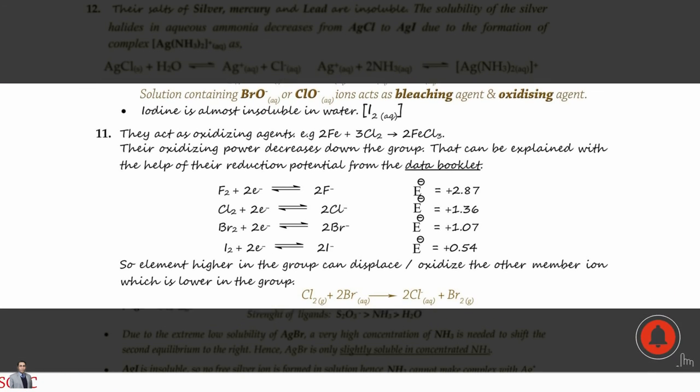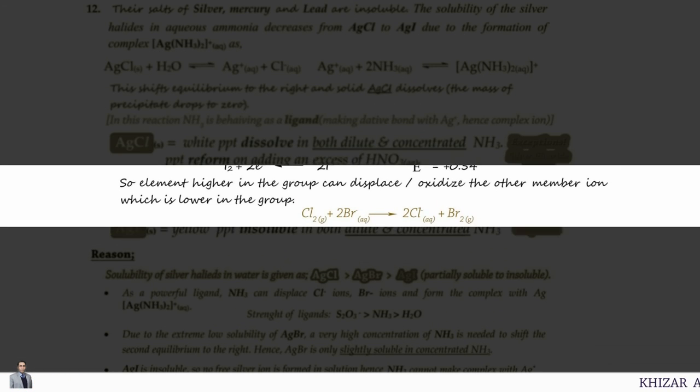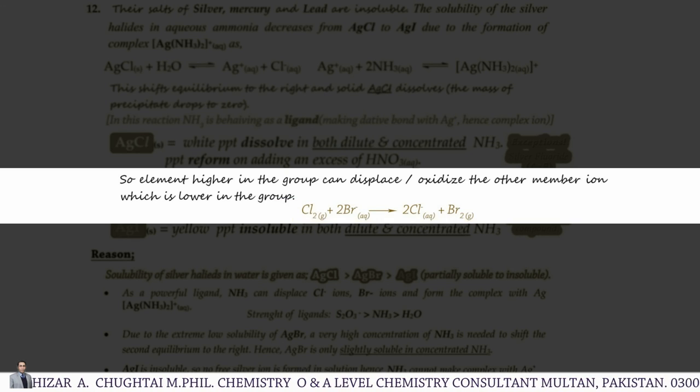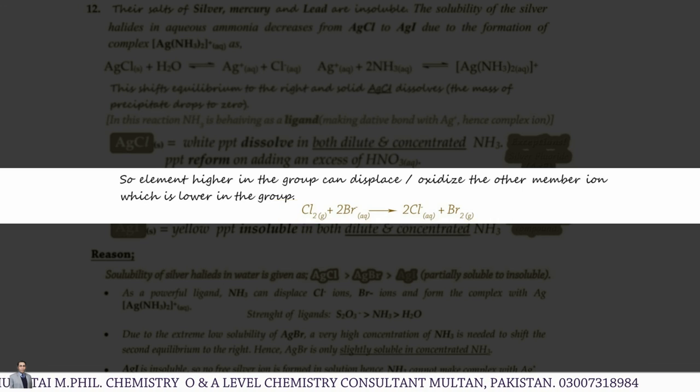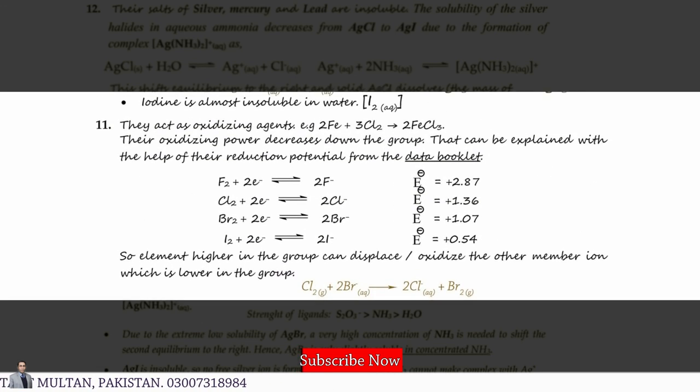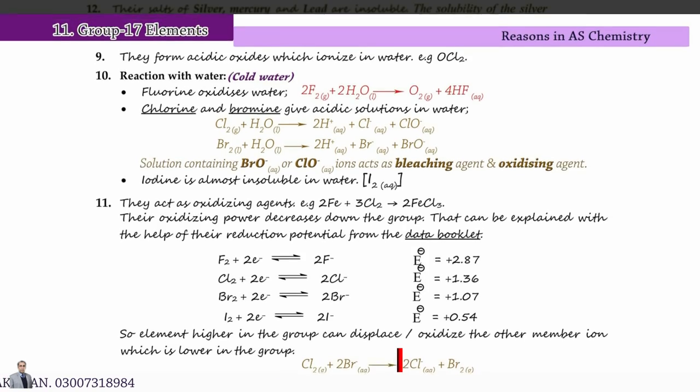So the element higher in the group can displace or oxidize the ion of the other member. For example, Cl2 can oxidize Br- and I- as well, because Cl2 is higher in the group and Br2 and I2 are lower in the group. But the reverse is not true. So, for example, Br2 cannot oxidize Cl- into Cl2.